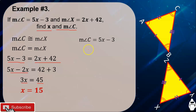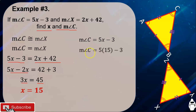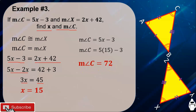Let's solve for the measurement of angle C. The measurement of angle C equals 5X minus 3. Substituting X equals 15: angle C equals 5 times 15 minus 3, which simplifies to 72 degrees.